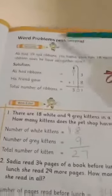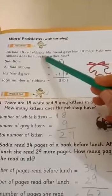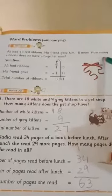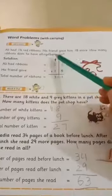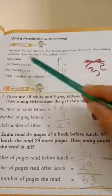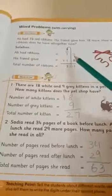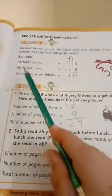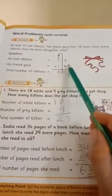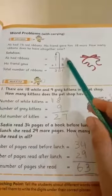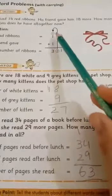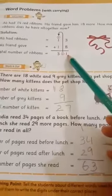Word problems. Ali had 14 red ribbons. His friend gave him 18 more. How many ribbons does he have altogether now? Ali had how many ribbons? 14. His friend gave how many? 18. Total number of ribbons: 8 plus 3, 9, 10, 11. 1 carry kia. 1 plus 1, 2 plus 3. 31. Total ribbons 31.